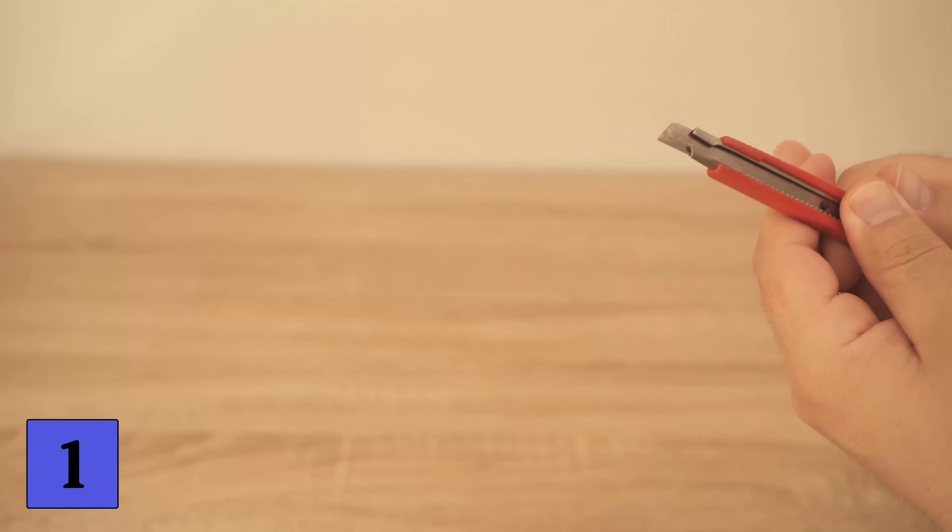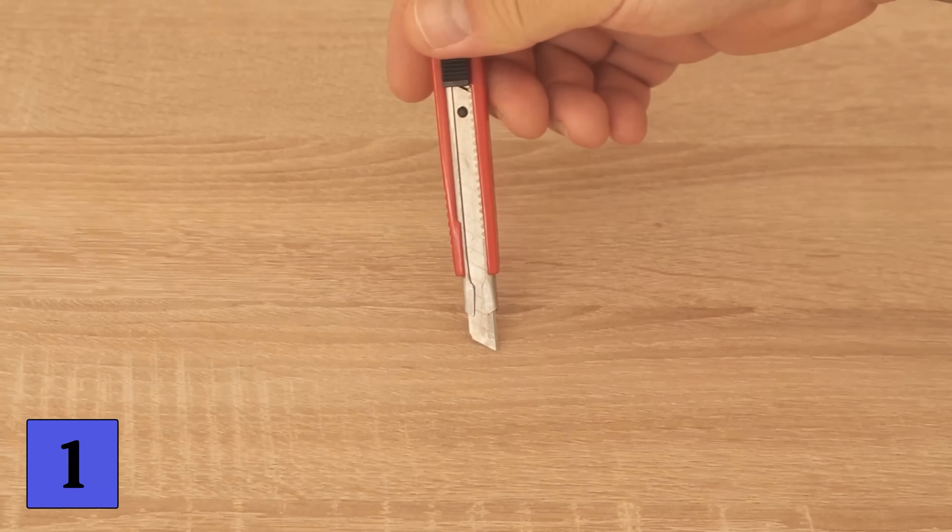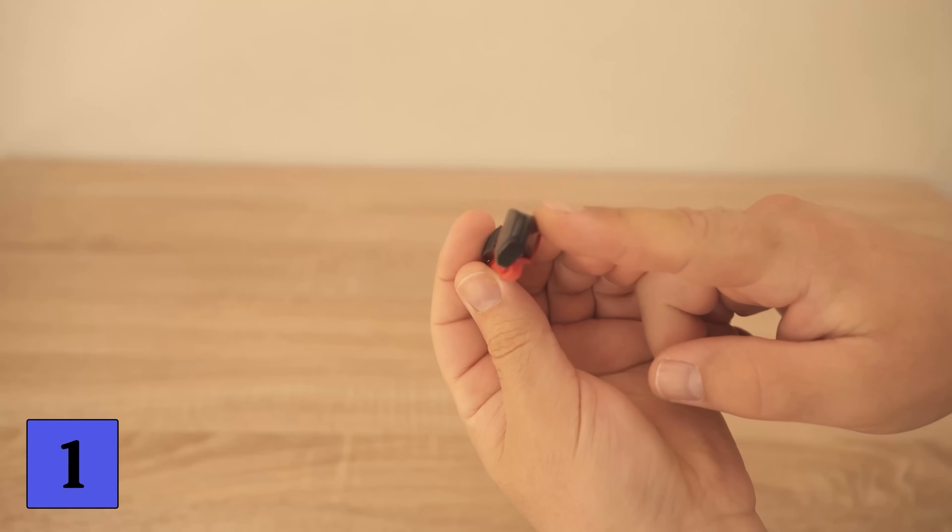Actually, you take the cutter knife, then you press it on the floor or somewhere on the wall so that the blade breaks off here at the pre-determined breaking point. But that is actually the wrong way to do it.